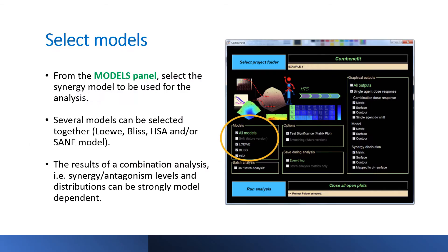From the Models panel, select the Synergy model to be used for the analysis. Several models can be selected together. Options include Low, Bliss, HSA, and SANE model. Notice that the results of a combination analysis levels and distributions can be strongly model-dependent. We advise consistency across analyses by always using a specific model or subset of models.